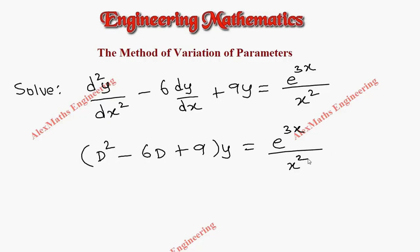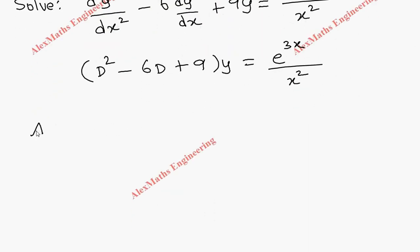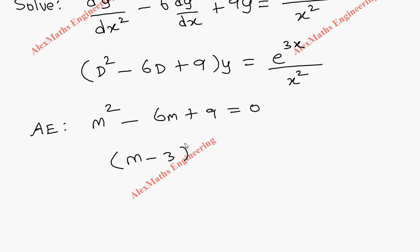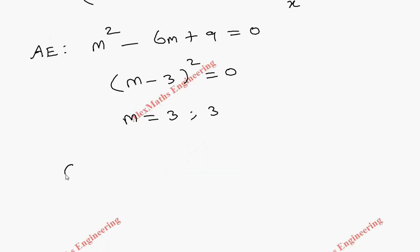As the first part, we have to write the auxiliary equation: m² - 6m + 9 = 0, which factors as (m - 3)² = 0. So we get two values for m, both equal to 3.